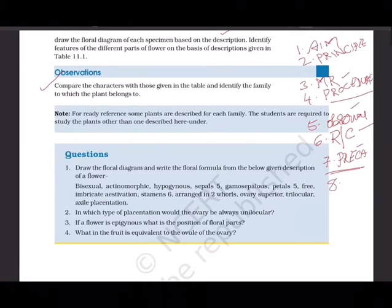At the end of the experiment is the viva. The external examiner will ask questions related to this experiment and theory to ascertain that what you've written is your own understanding, not copied or rote memorization. Sample viva question: Draw the floral diagram and write the floral formula from the given description of a flower.